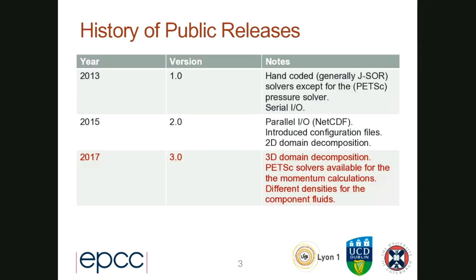The history of public releases, as shown here: the first public release was in 2013. The public versions have developed out of various other code developed for research purposes over the years. They were hand-coded and generally used Jacobi-SOR solvers. What we did in the first public release was to introduce the first PETSc solver, which was for the pressure solver — the most time-consuming part of the computation.